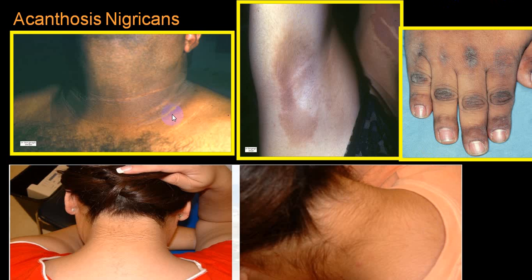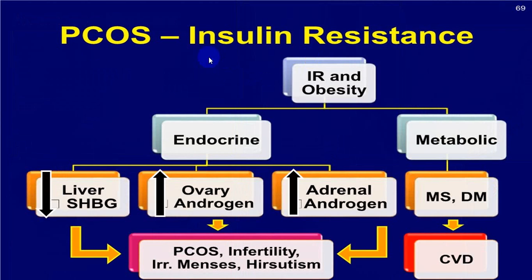Acanthosis nigricans can be seen at the neck, axilla, and knuckles. PCOS is a common finding in females and is associated with increased insulin resistance and obesity. It is a classical disorder where ovarian androgens are increased; adrenal androgens are also frequently elevated. PCOS results in infertility, hirsutism, and insulin resistance.